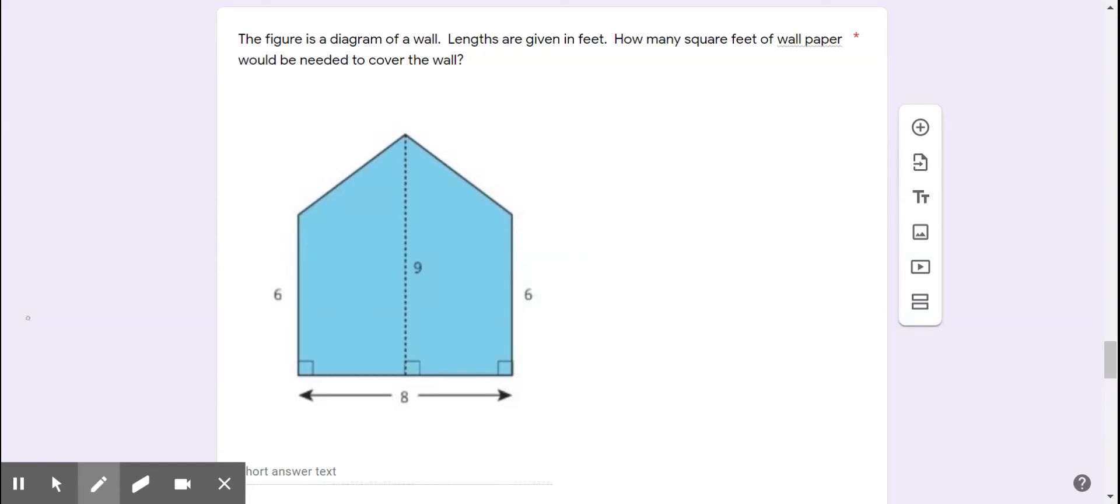You might find the area of this wall in this problem. Well, this is a pentagon. We do not have the formula for a pentagon, but I can decompose the pentagon by cutting it right there, and that will make a rectangle on the bottom and a triangle on the top.